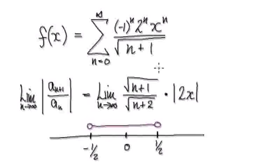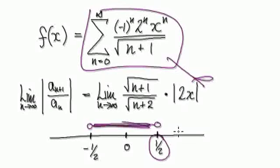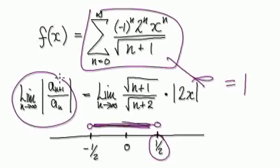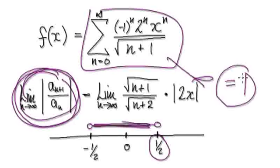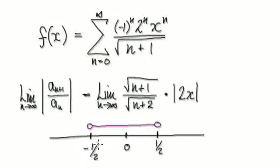Following on from the previous video, we got to this stage where anything in this interval will cause the series to converge. But dead on a half, this value will be equal to 1. So when it comes to the ratio test, if this equals 1, then it's inconclusive. Dead on negative a half, this will also be equal to 1 — again inconclusive. So we need to manually check negative a half and a half.